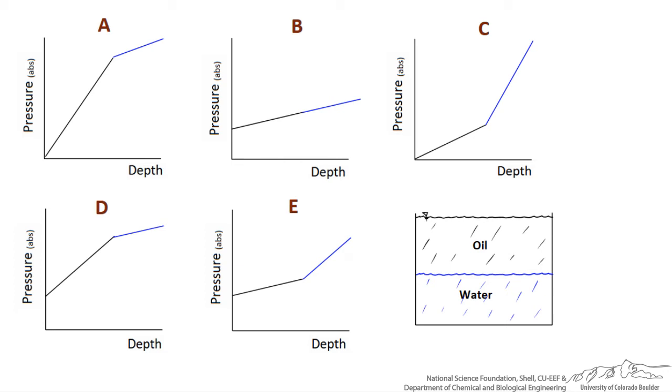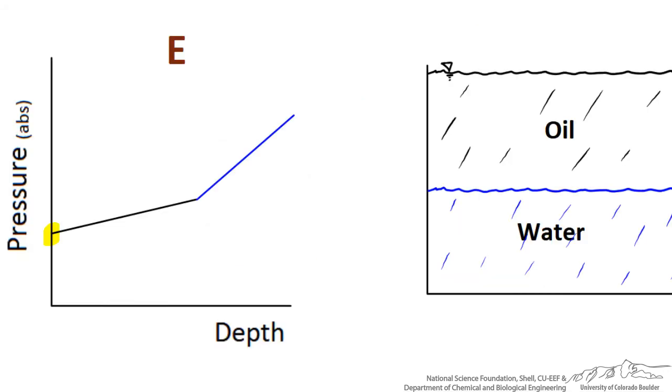You have chosen answer E. Diagram E shows that the absolute pressure starts at some value. This value is atmospheric pressure, such as open atmosphere, and increases linearly with depth.